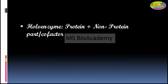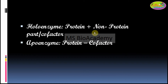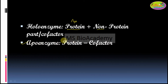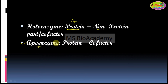A holoenzyme is a combination of the protein part plus the non-protein part. The non-protein part is the cofactor or coenzyme, and the protein part is called the apoenzyme. So, the apoenzyme is basically the protein part minus the cofactor, which you can see in the next definition.